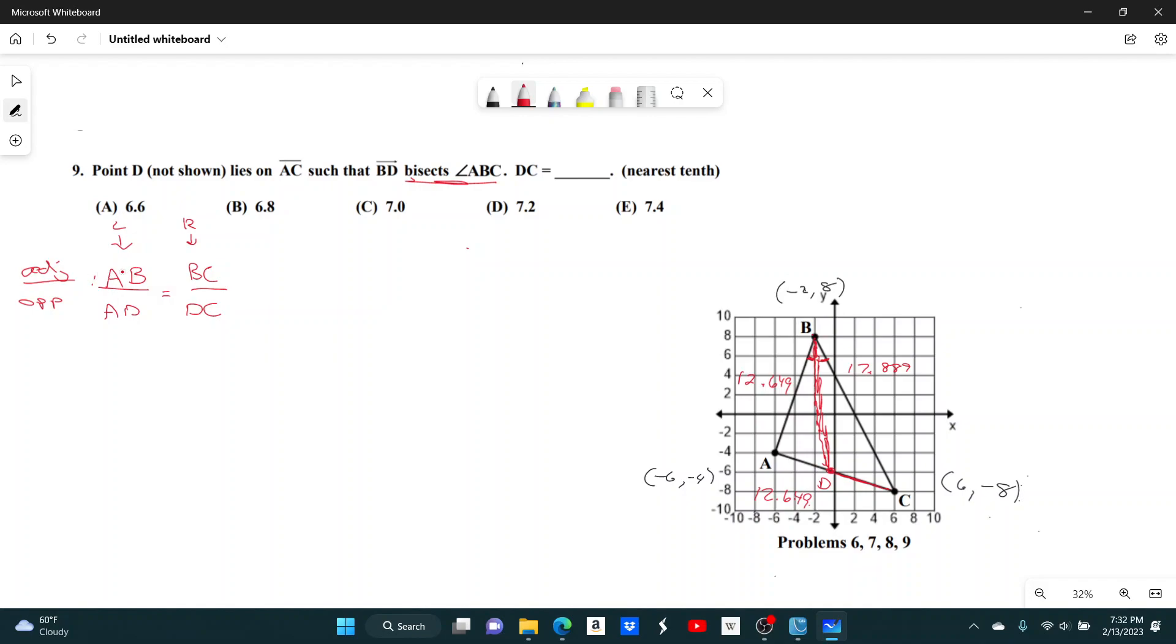Okay. So, let's see. What's AB? AB, it looks like, is 12.649, divided by AD, which, here's what I'm going to do. We're looking for DC, so I'm going to call DC the variable X, and then AD will be the total length of AC minus this little portion. So, AD will be 12.649 minus X.